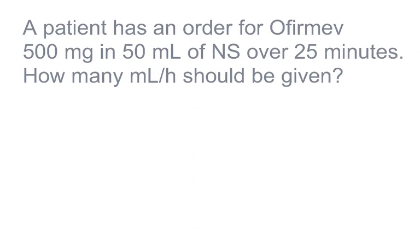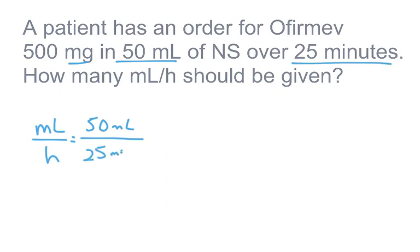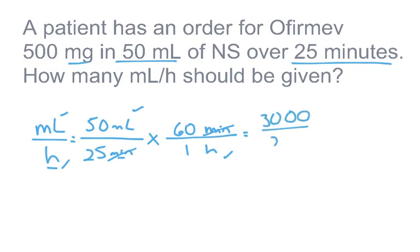Next: a patient has an order for 500 milligrams in 50 milliliters of normal saline over 25 minutes. I want to know milliliters per hour. I start with 50 milliliters. The milligrams won't cancel, so I put 25 minutes on the bottom. I then multiply by 60 minutes over 1 hour to cancel minutes. So: 50 × 60 ÷ 25 = 3,000 ÷ 25 = 120 milliliters per hour.